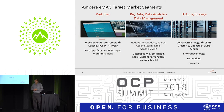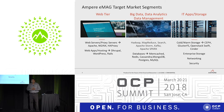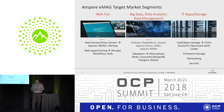Ampere is focusing on three market segments: web tier, big data and data analytics, and IT applications and storage. Within the web tier, workloads include web servers like Nginx, HAProxy, web proxies, and hosting applications like Drupal, WordPress, and Rails.